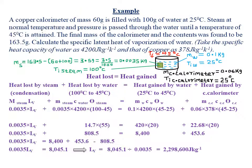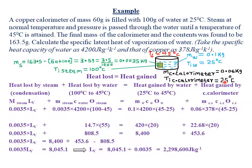We look at an example: a copper calorimeter of mass 60 grams — that is 0.06 kg — is filled with 100 grams of water, which is 0.1 kg, at 25 degrees Celsius. Because the water was placed in the calorimeter, the initial temperature of the water, which is 25°C, equals the initial temperature of the copper calorimeter, which is also 25°C, simply because initially they were in the same container.